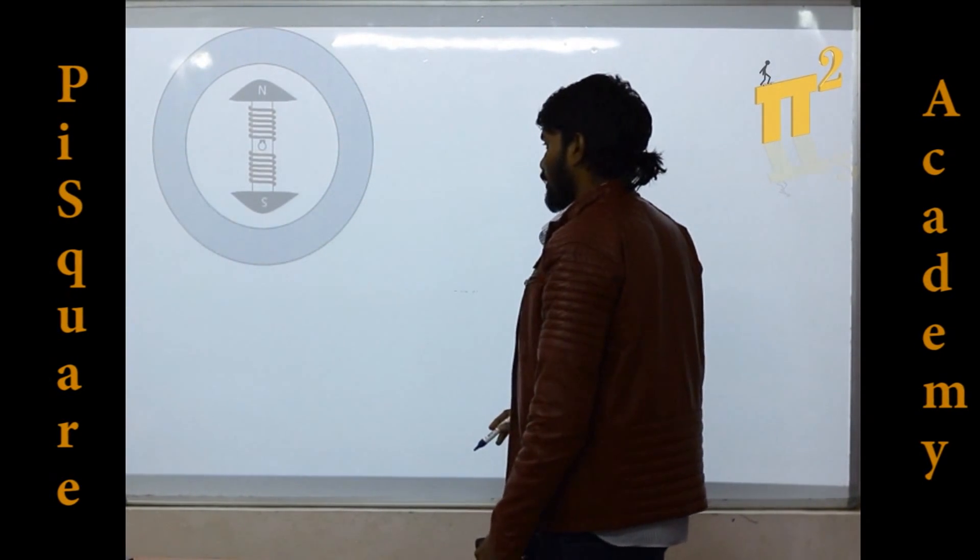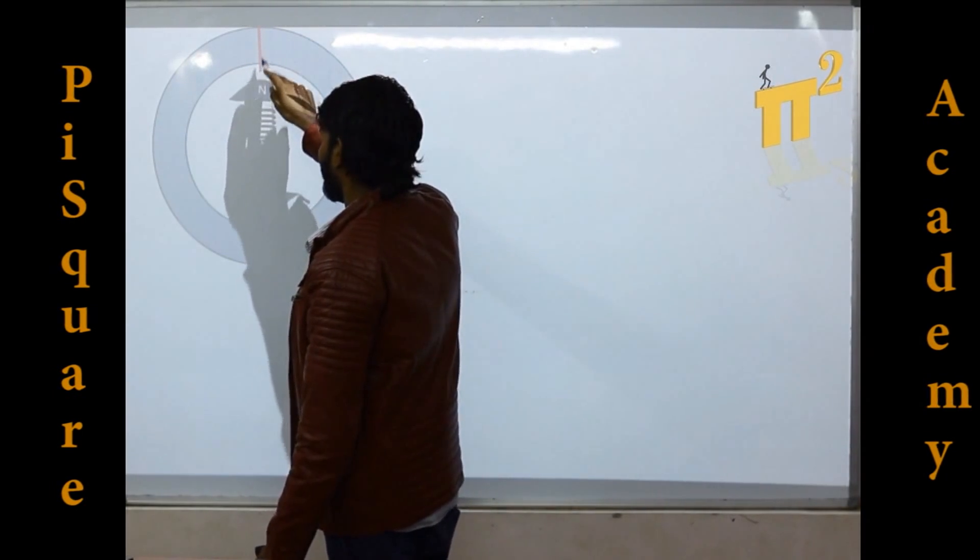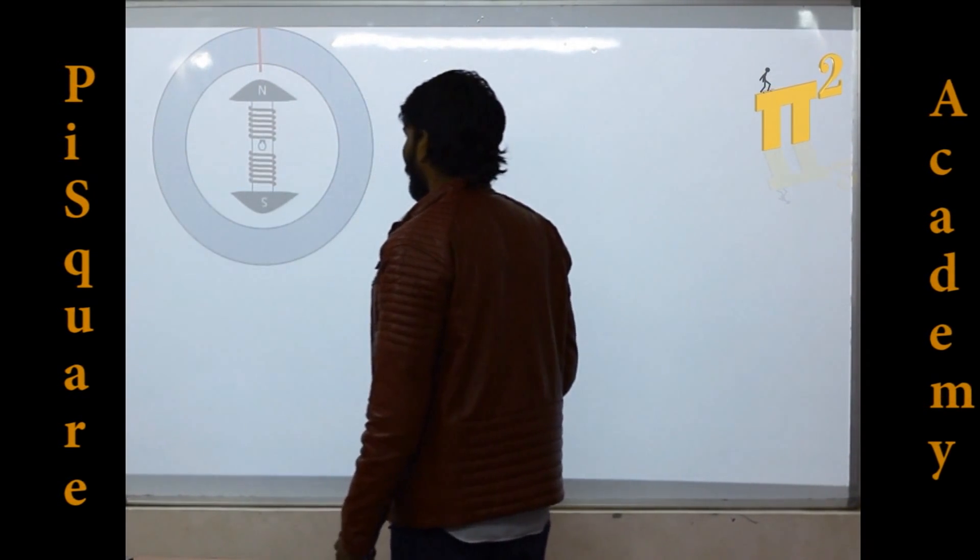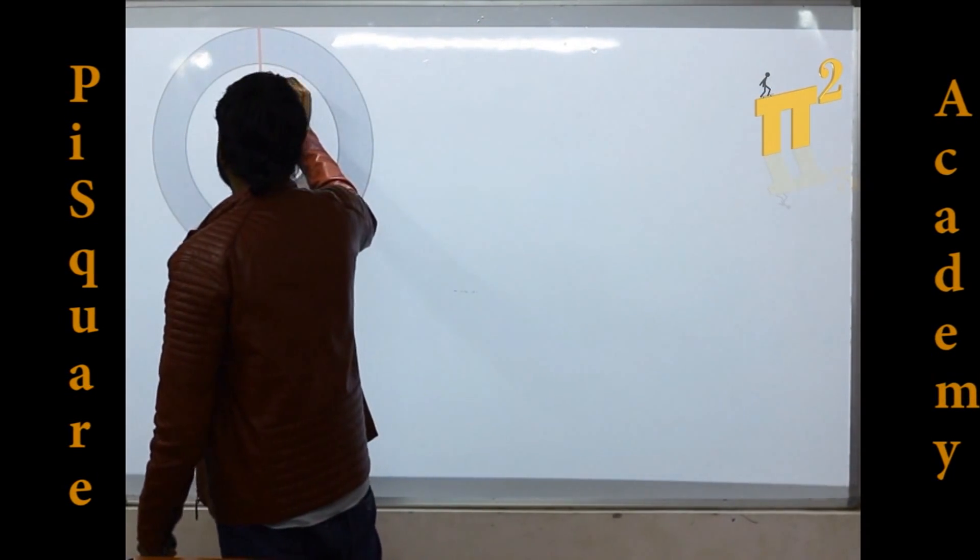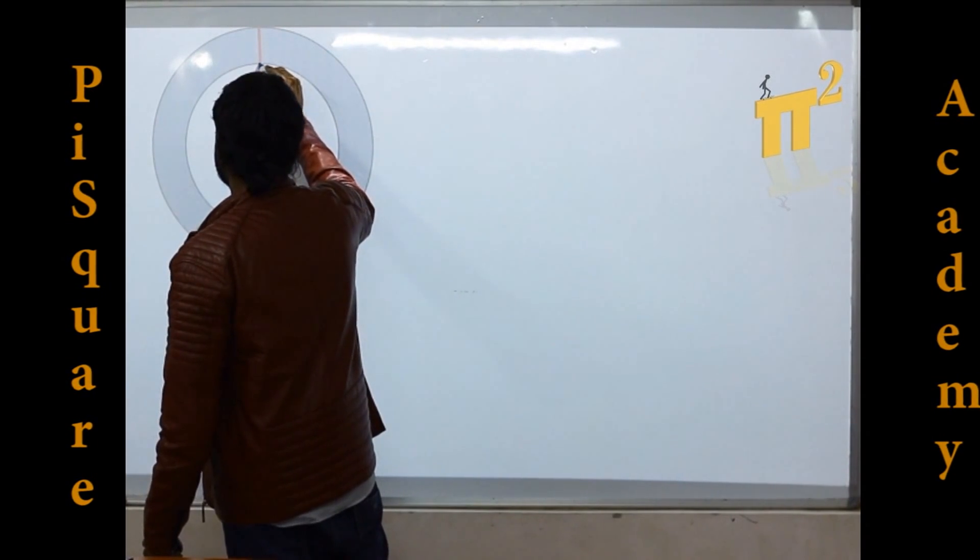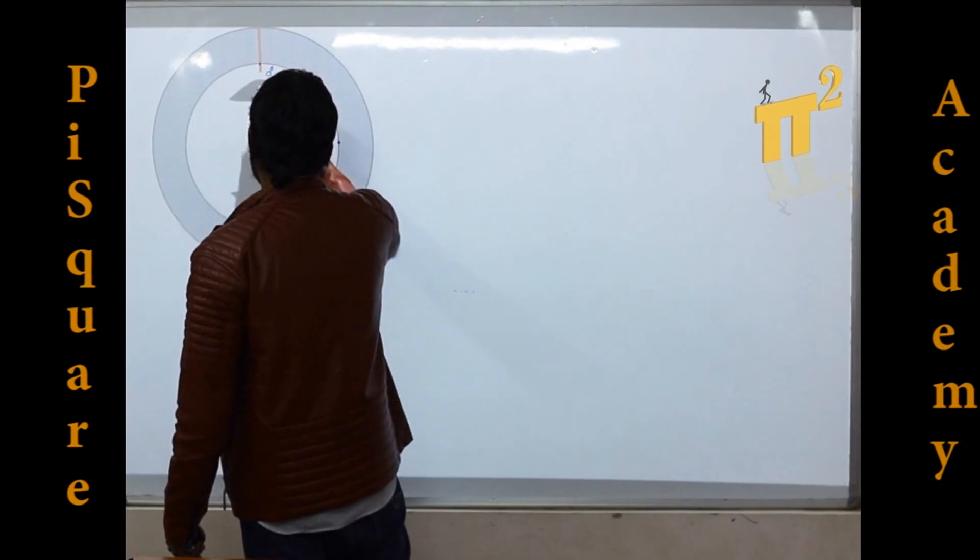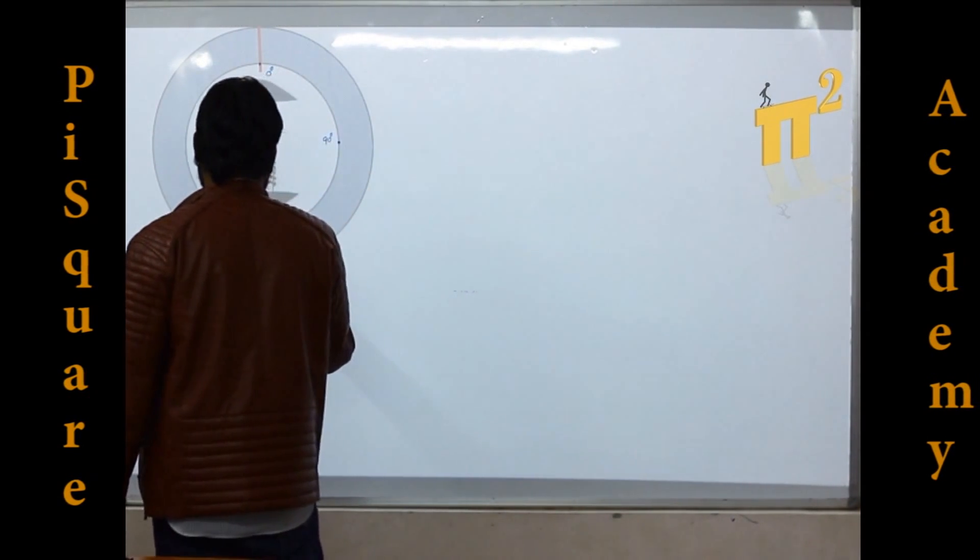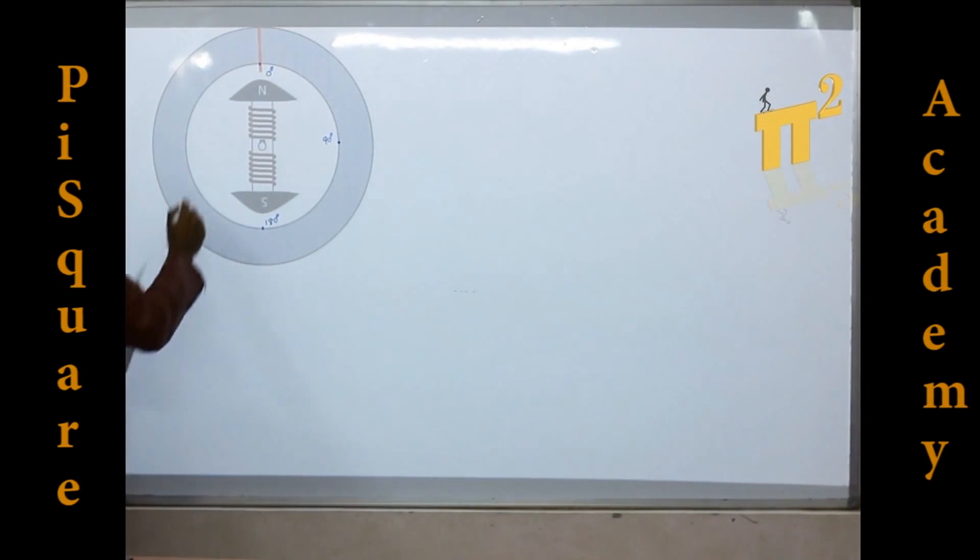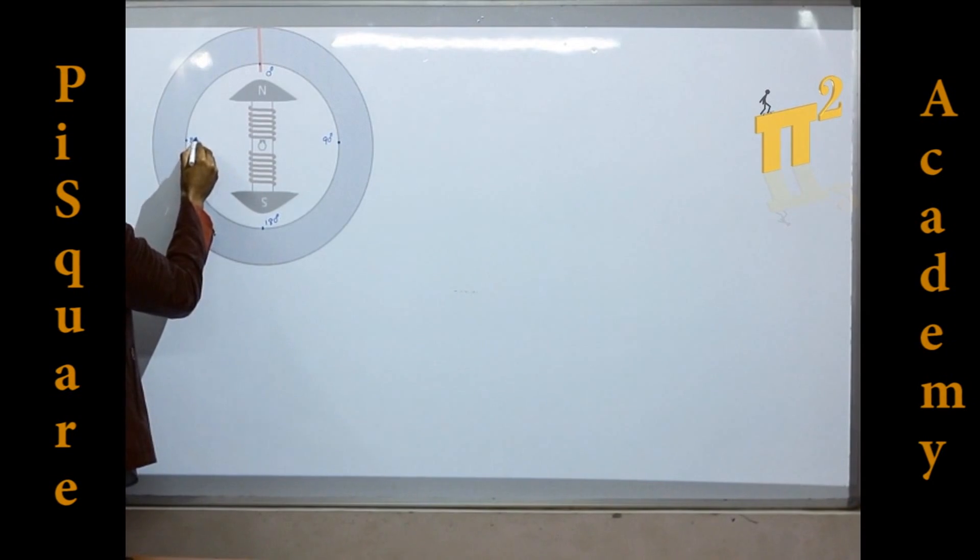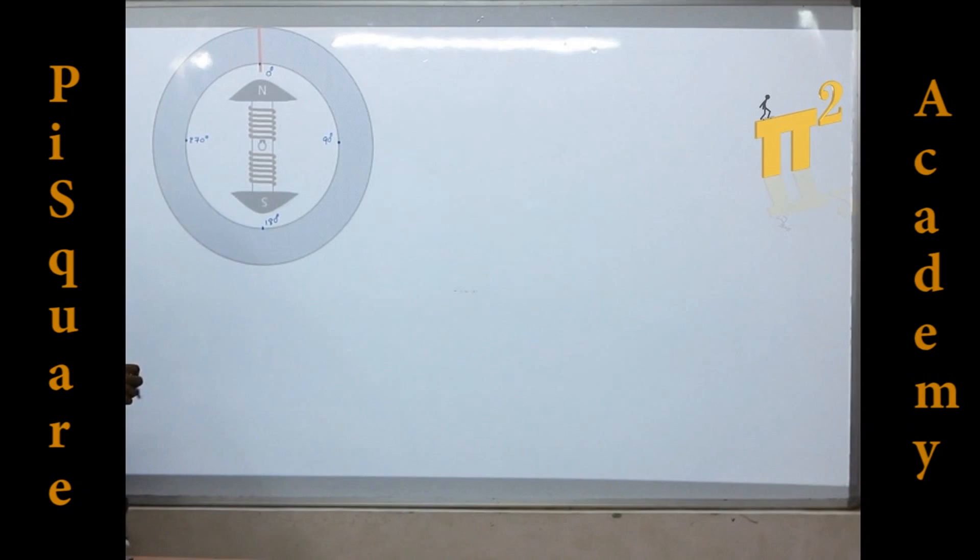Now if I cut this stator here, if we make a cut over here and if you see, if we take this one as 0 degrees instant, this has 90 degrees in space, again this is 180 degrees in space, this is 270 degrees in space, and back 360 degrees in space or 0 degrees in space.